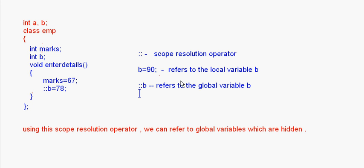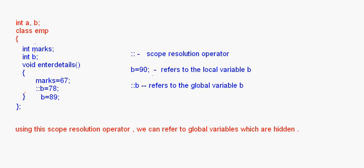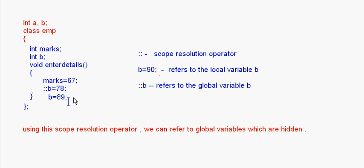Here I've written marks = 67, then ::b = 78, which assigns to the global variable, and b = 89, which assigns to the local variable. So we have solved the problem of assigning a value to the global variable by using the scope resolution operator — the two colons.